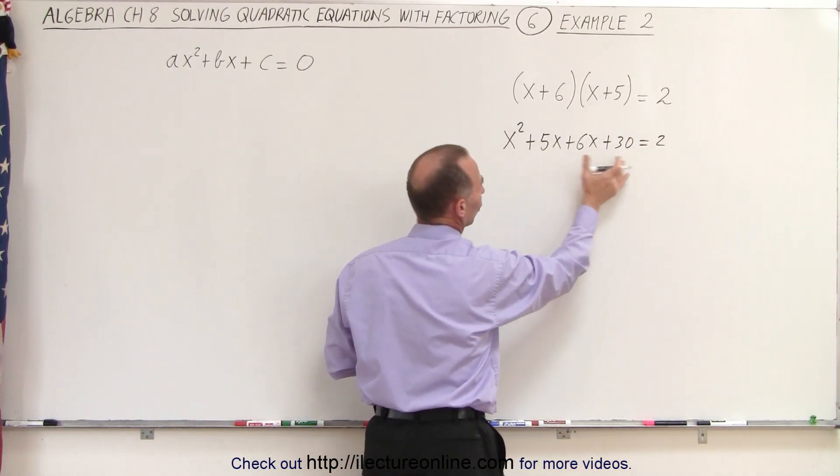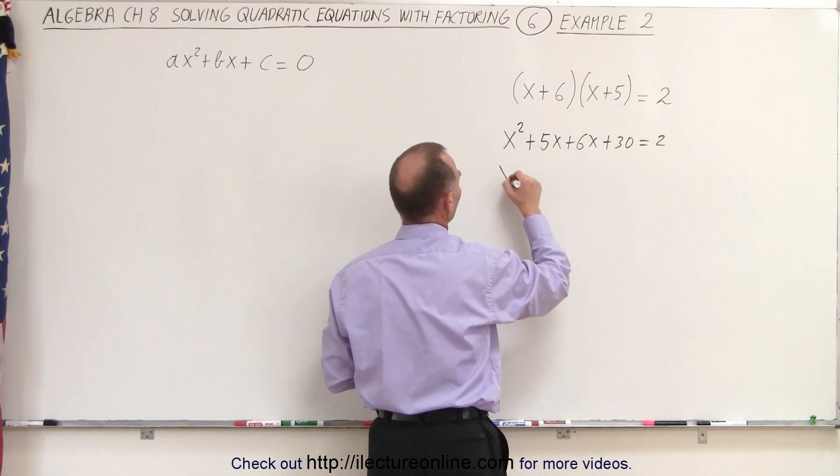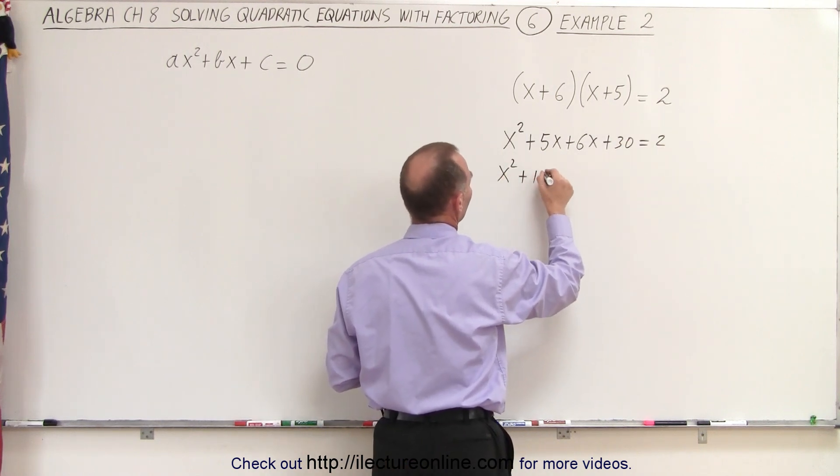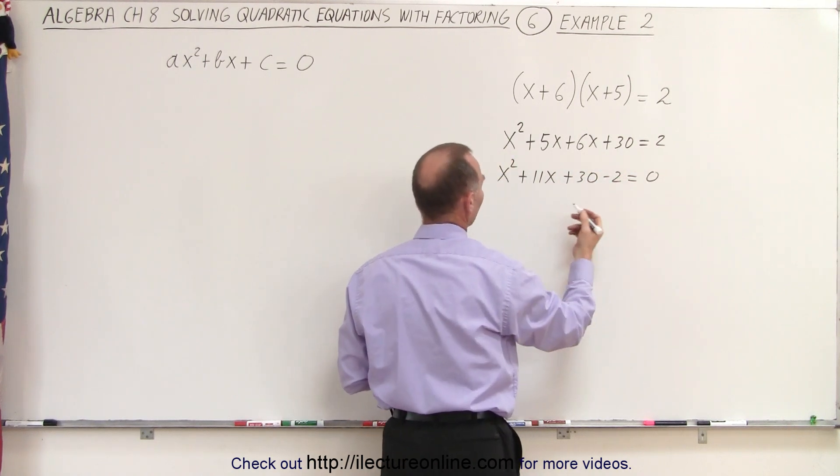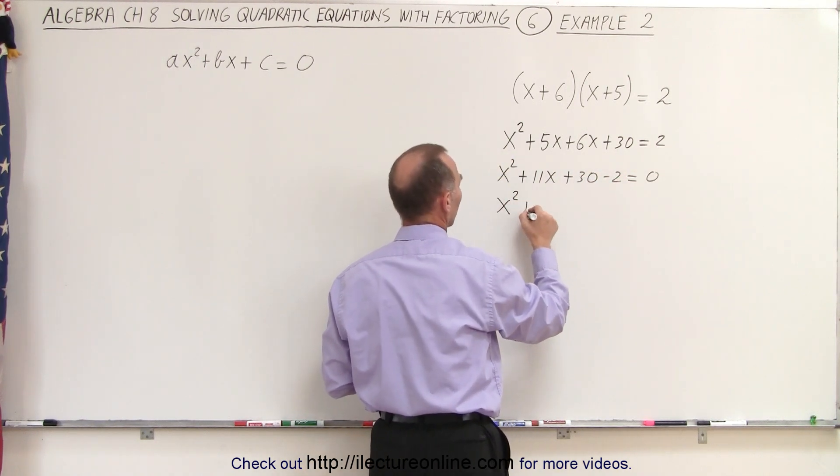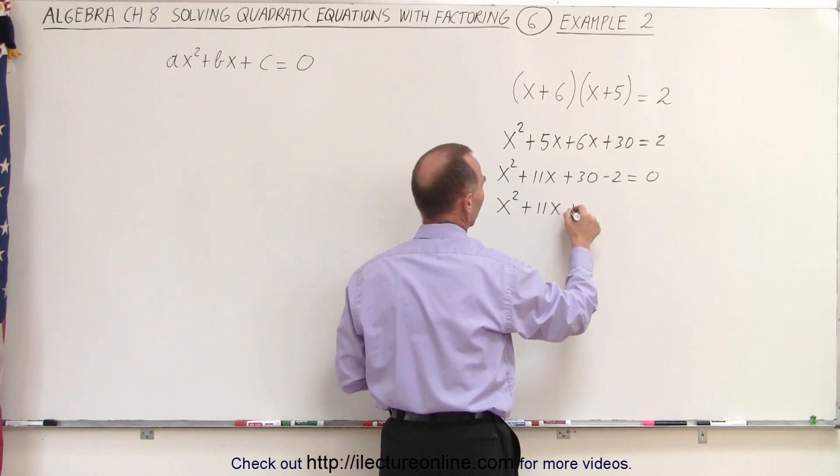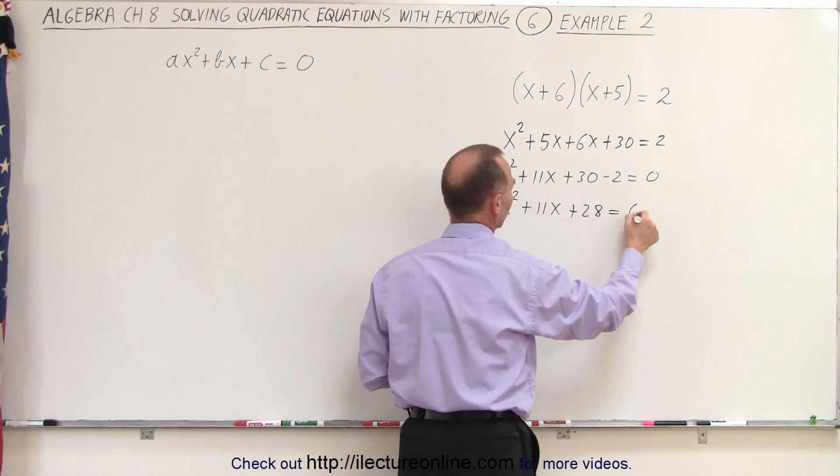We can now combine these two terms and move the 2 across. So we have x squared, plus 11x, plus 30 minus 2 equals 0. And now finally we have x squared, plus 11x, plus 28 equals 0.